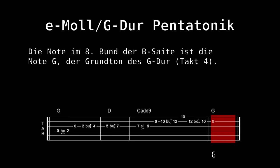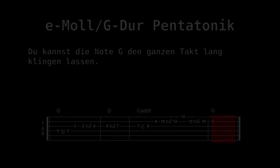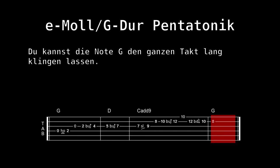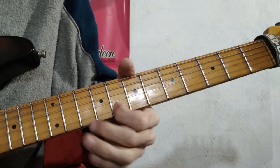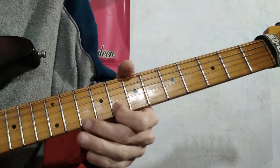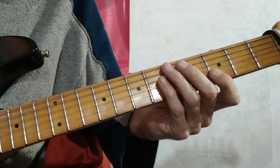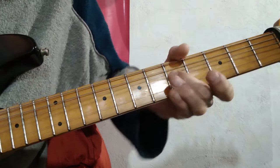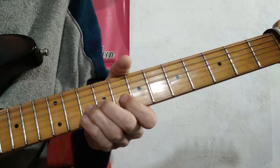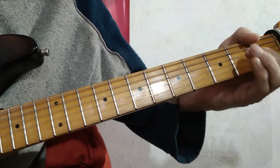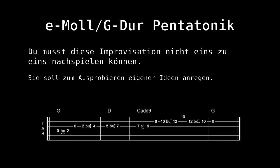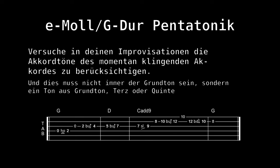Die Note im achten Bund der H-Seite ist die Note G, der Grundton des G-Dur Dreiklangs im Takt 4. Die Improvisation soll nicht eins zu eins nachgespielt werden – sie soll zum Ausprobieren eigener Ideen anregen. Versuche in deinen Improvisationen die Akkordtöne des momentan klingenden Akkordes zu berücksichtigen.